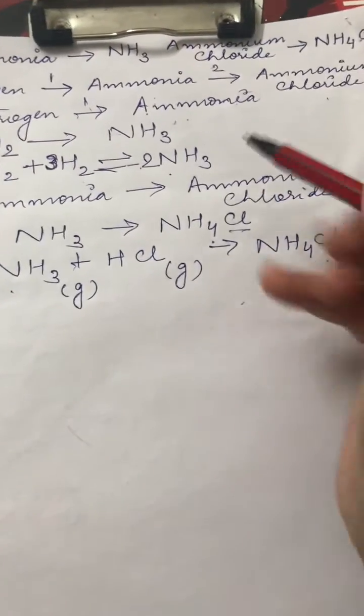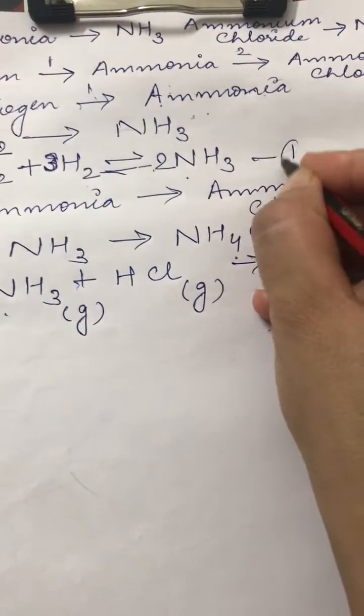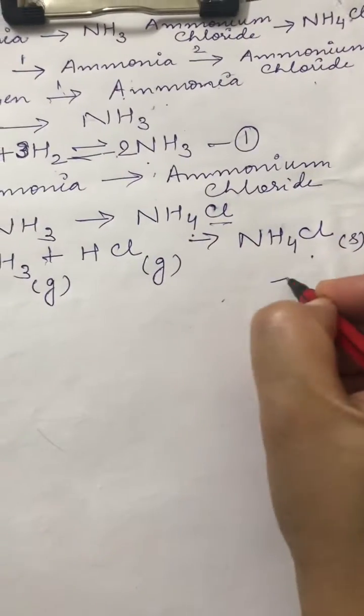This is how we solve this equation in two steps. Step number one, conversion of nitrogen to ammonia. Step number two, conversion of ammonia to ammonium chloride.